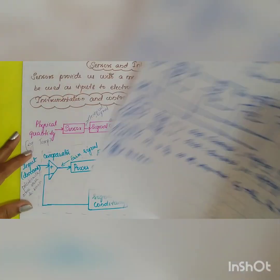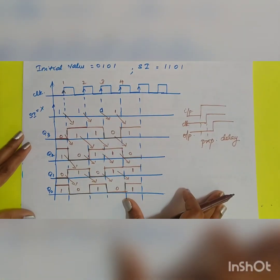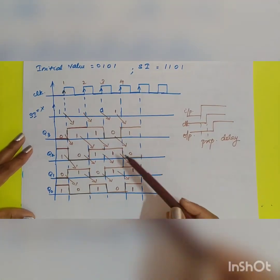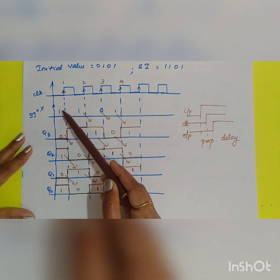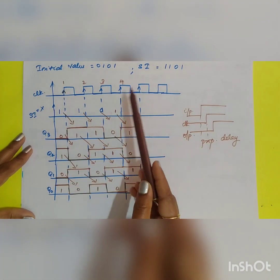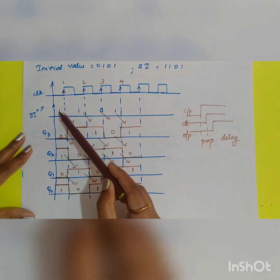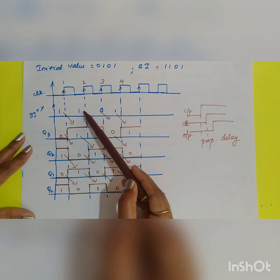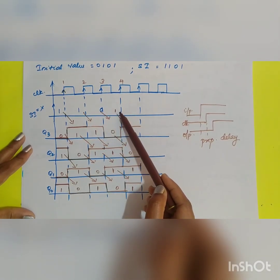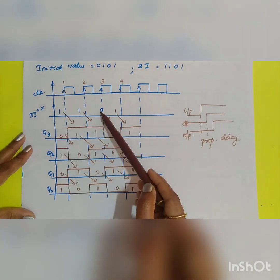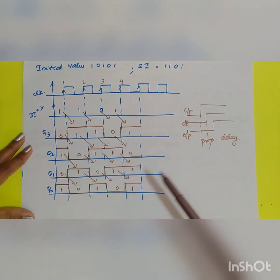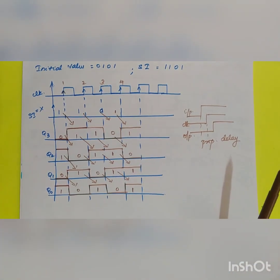To summarize: the initial value is 0101 and the serial input applied is 1, 1, 0, 1. The corresponding outputs for Q3, Q2, Q1, Q0 across the four clock pulses can be read from the timing diagram as derived above.